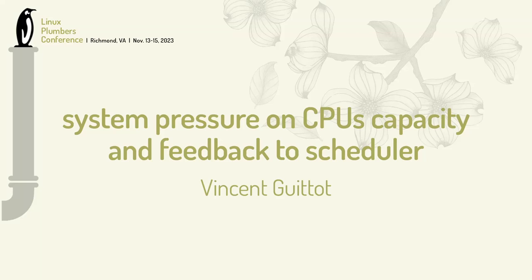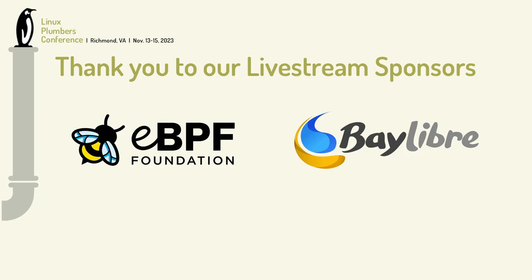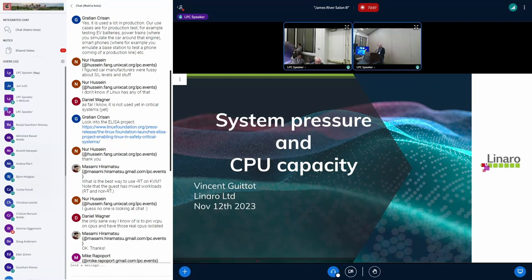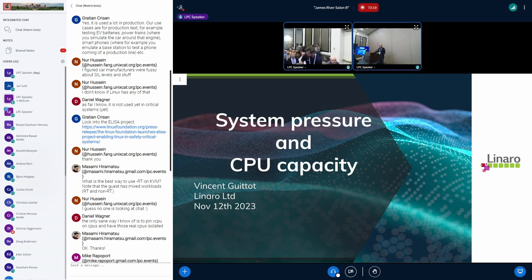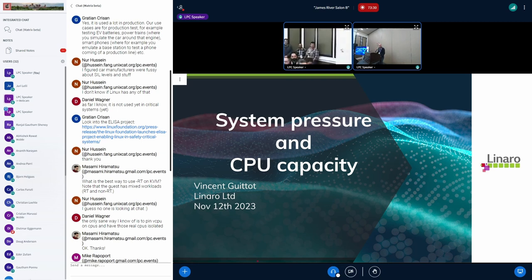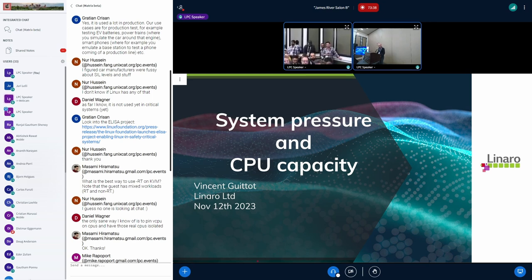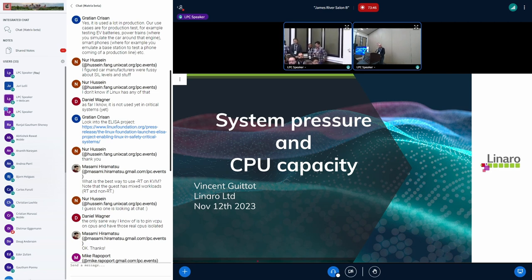Hi everybody. My name is Rason Guito, I'm working for Linaro in the kernel working group, mainly on the scheduler. Today I'm going to speak about system pressure and CPU capacity, which is mainly about the fact that even if you have a powerful CPU, most of the time you can't use its highest compute capacity all the time on your system, and how you can reflect that in the scheduler for better task placement or load balancing. This is something I discussed at OSPM six months ago, so this will mainly be a kind of update and follow-on.